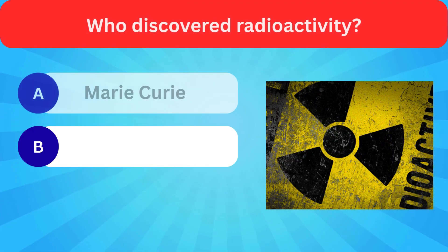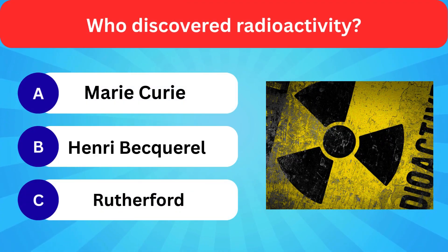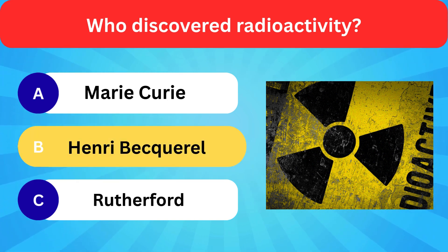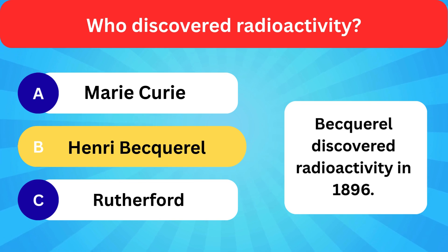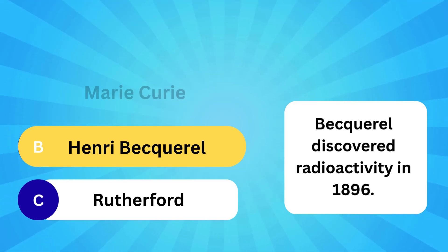Who discovered radioactivity? Options: Marie Curie, Henri Becquerel, Rutherford. Correct answer is Henri Becquerel. Becquerel discovered radioactivity in 1896.